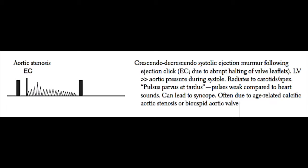The aortic stenosis murmur will be loudest at the aortic listening point, but will also radiate to the carotids as well as the apex of the heart. These patients present with what's known as pulsus parvus et tardus, which means the pulse felt in the radial part of the wrist is weak and late compared to the heart sounds. Parvus means weak and tardus means late — this is classic for aortic stenosis. Aortic stenosis can also lead to syncope and is generally due to age-related calcific aortic stenosis or bicuspid aortic valve disease.